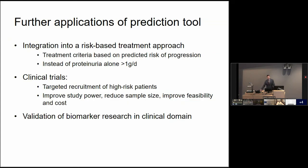There are further applications to the prediction tool. Ideally we'd like to use an individual patient's risk of progression to make treatment decisions rather than a simple categorization of proteinuria, though we need more research. There is also an opportunity to enrich clinical trial cohorts with higher-risk patient populations, improving power and potentially reducing sample size requirements and cost. It also offers key infrastructure to validate biomarkers in the clinical domain — having a prediction model available allows you to do that in a much smaller cohort than would otherwise be required.